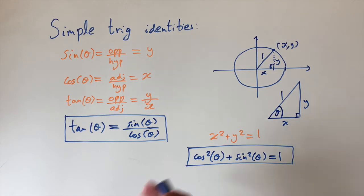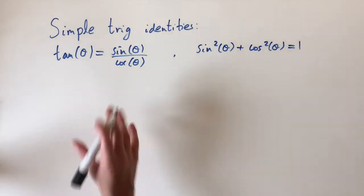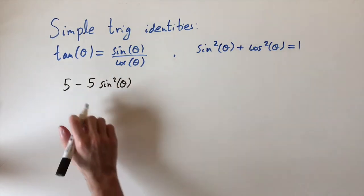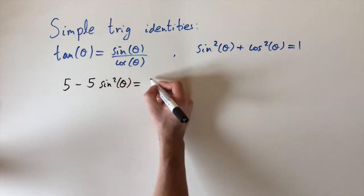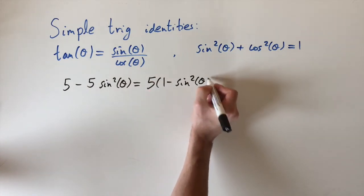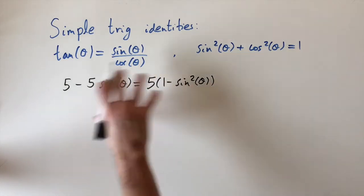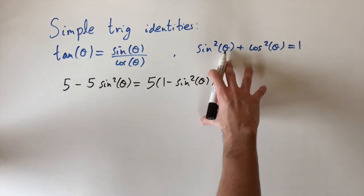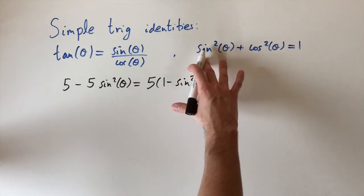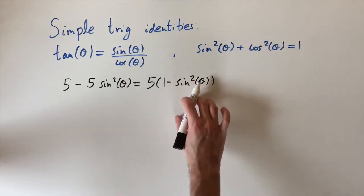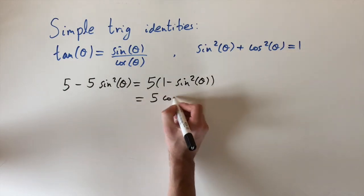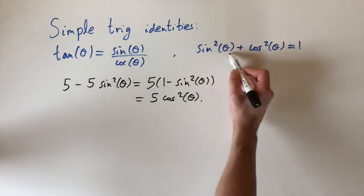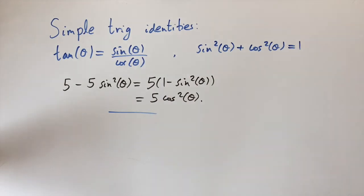Now let's look at some examples. For the first expression, 5 − 5sin²θ, we first factor out the five to get 5(1 − sin²θ). We then use the Pythagorean identity rearranged: subtracting sin²θ from both sides gives 1 − sin²θ = cos²θ. So the expression simplifies to 5cos²θ.